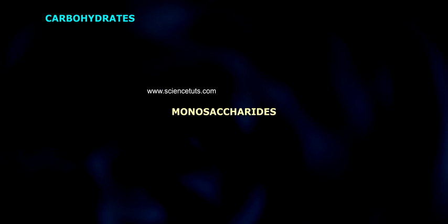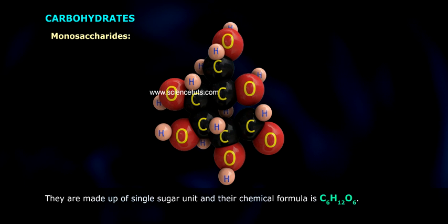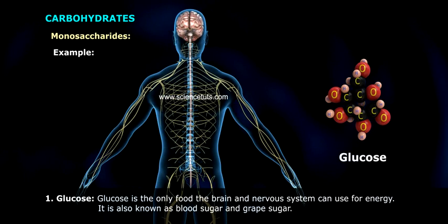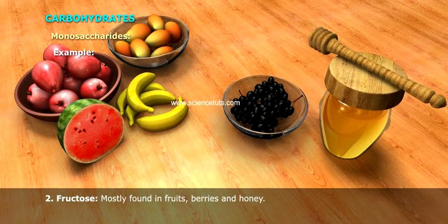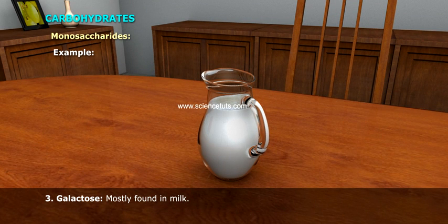Monosaccharides are made up of a single sugar unit and their chemical formula is C6H12O6. Examples: 1. Glucose — the only food the brain and nervous system can use for energy, also known as blood sugar and grape sugar. 2. Fructose — mostly found in fruits, berries, and honey. 3. Galactose — mostly found in milk.